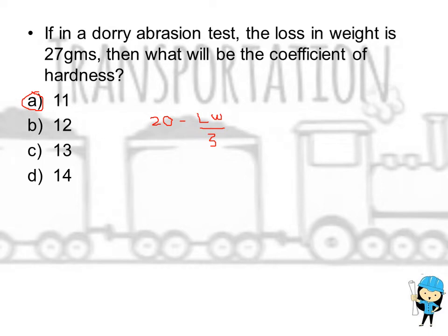If in a Dory abrasion test the loss in weight is 27 grams, then what will be the coefficient of hardness? For finding the coefficient of hardness from Dory abrasion test, we use the formula: 20 minus loss in weight divided by 3. The loss in weight is 27 grams. So the answer will be 7. Wait, that is coefficient of hardness is 11.